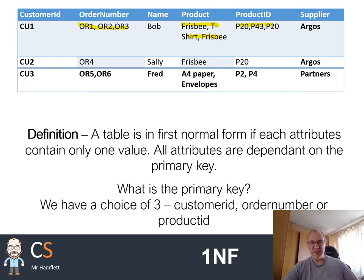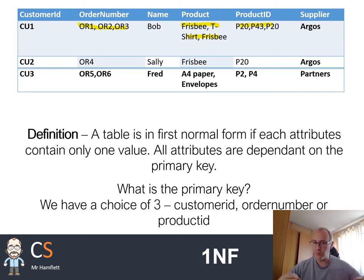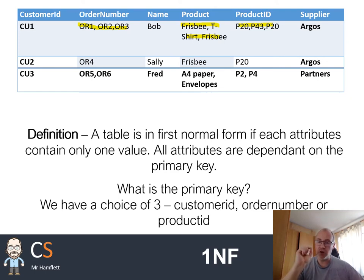Everything needs to be dependent on the primary key. Practically speaking, if you get rid of the aggregate data, 99% of the time you solve the other problem as well. So focus on this: if you see a cell with loads of stuff in it, that's when we do normalization. We've spotted the problem — too much stuff in one cell. How do we fix it?